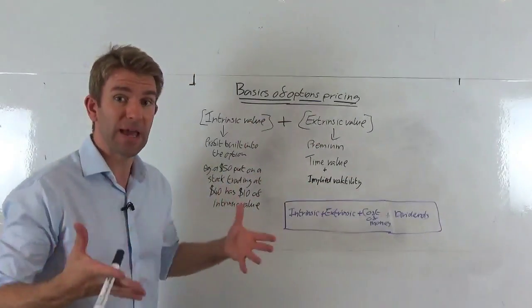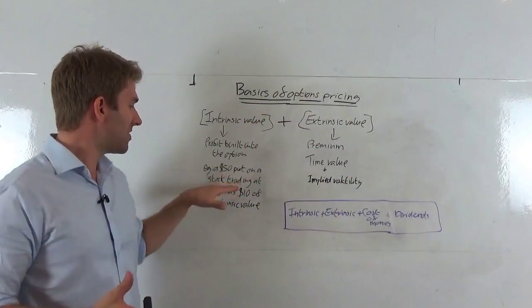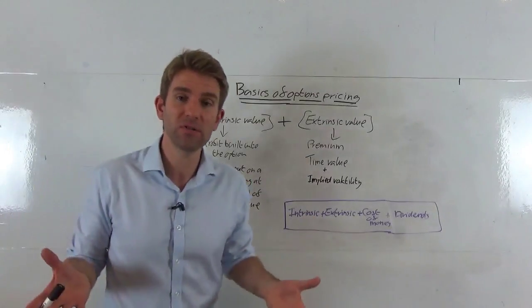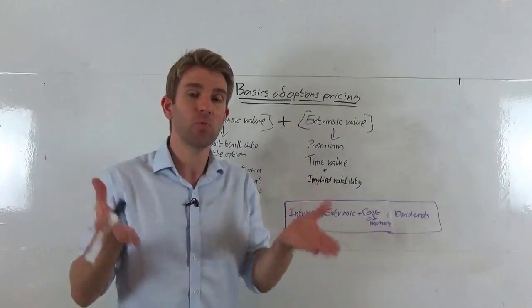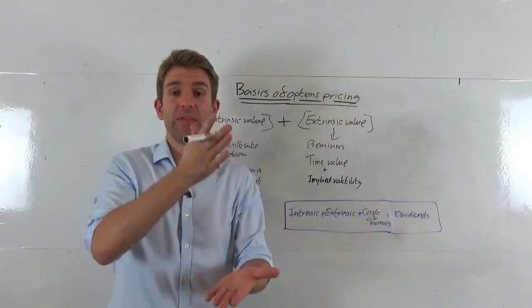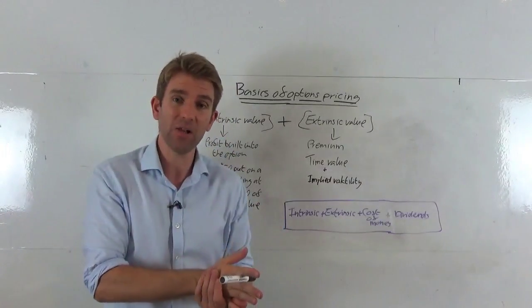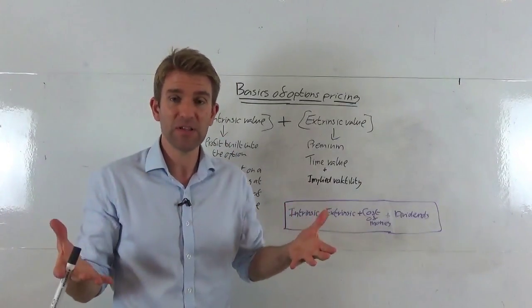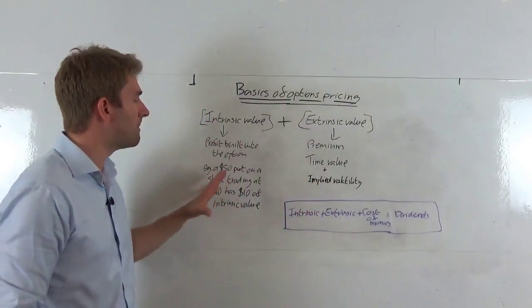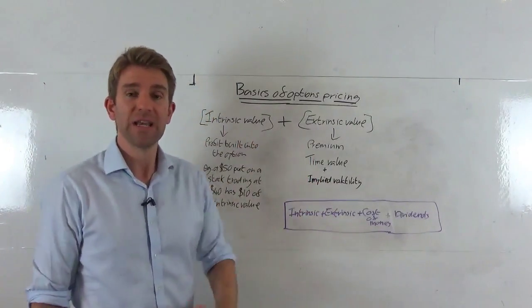Let's say the stock—if we bought a 50 put option—the stock is already trading at 40. That's already got $10 worth of value in the option, right? Because if it expired now and the stock was 40, we had the right to sell at 50, we'd definitely take that right up. That's got $10 worth of value. So the intrinsic value of that is $10.